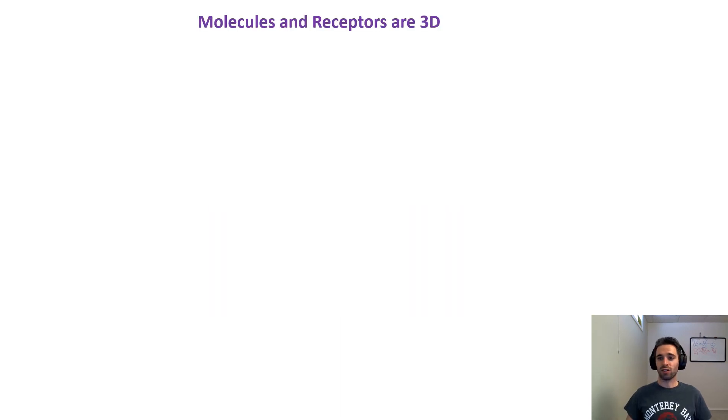As I talk about in a lot of my videos, molecules and receptors are three-dimensional, and you begin to understand this when you take organic chemistry. Although in OCHEM when you take the class, you generally draw molecules like this in a two-dimensional space. This is the two-dimensional representation of the psychedelic compound psilocin.